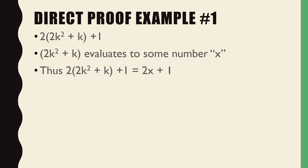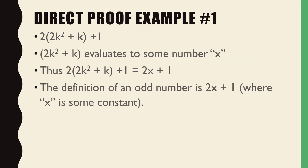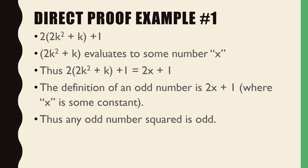The definition of an odd number is 2X plus one where X is some constant. Since the definition of an odd number is satisfied, thus any odd number squared is odd. This is where we had just one instance — some number K, I don't know what that number is, but it proved to hold true. Because of the way we did our math, since it's true for that one K that could have been any number, then it's true for all numbers. That's where you get universal generalization.